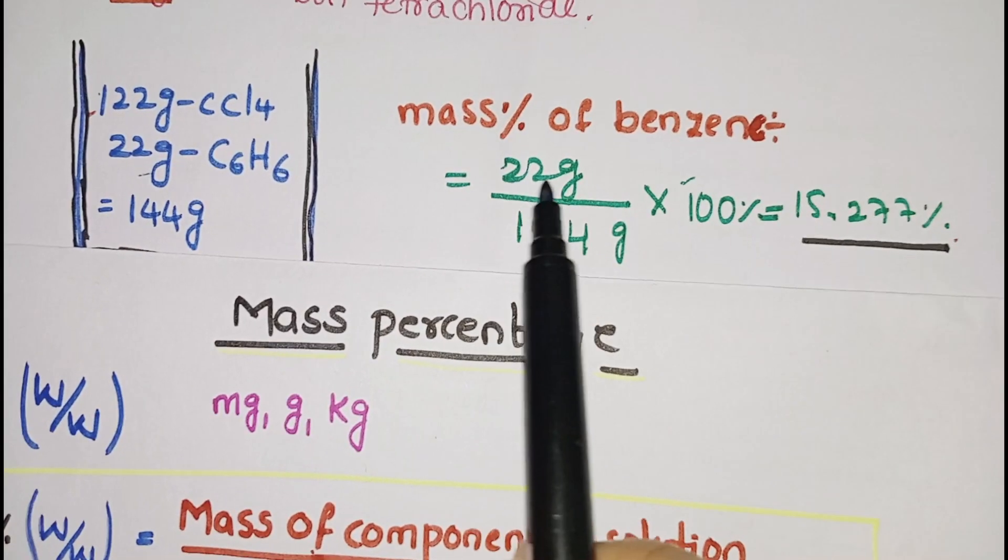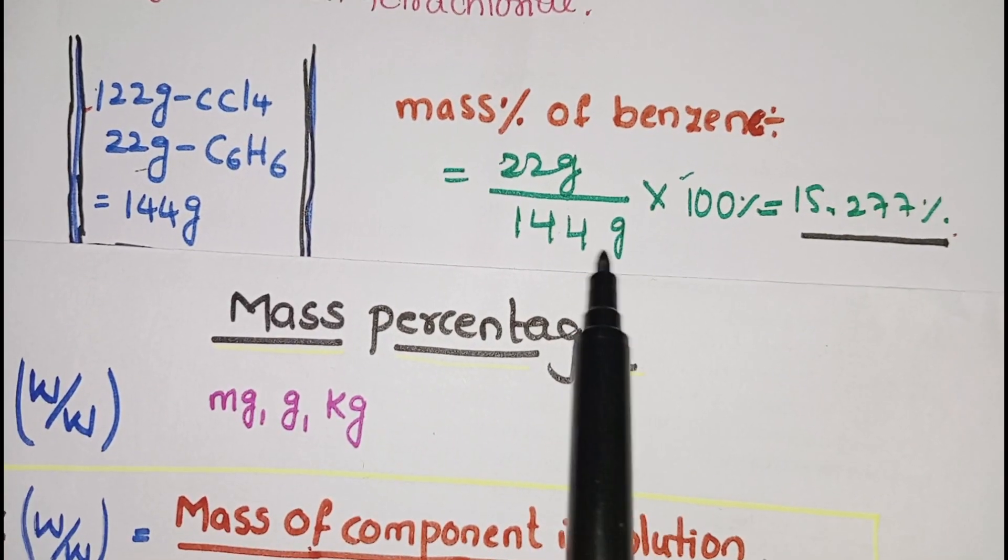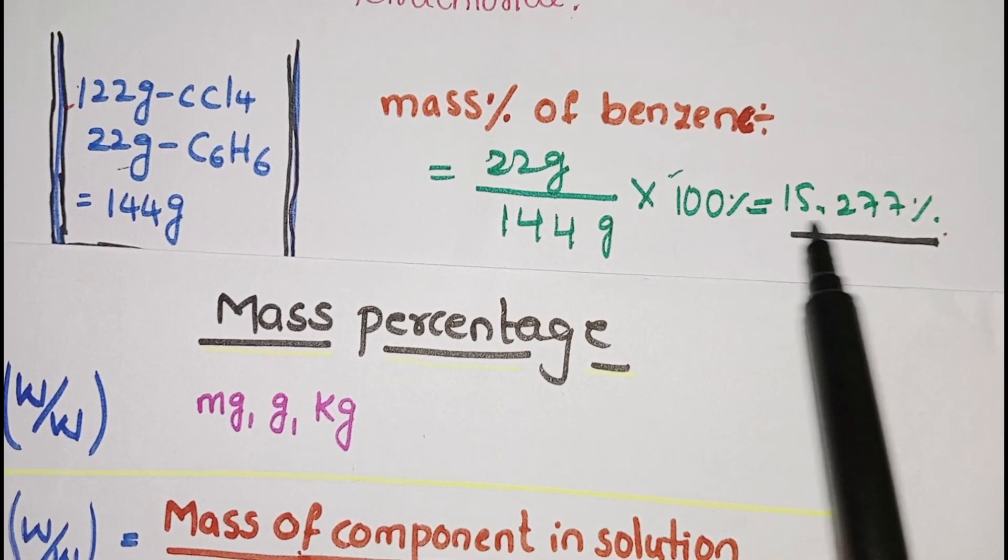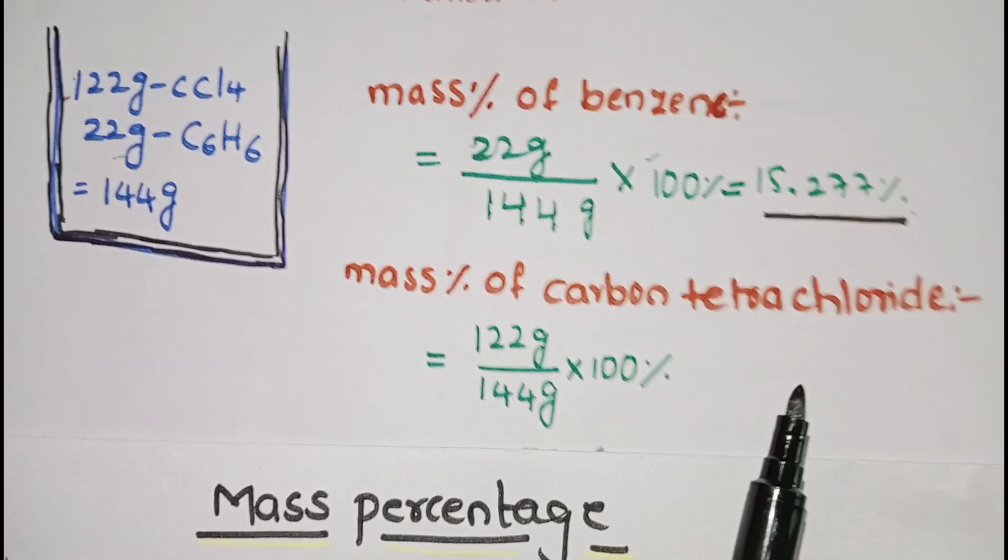So 22 grams benzene divided by total mass of the solution times 100. You get 15.227% mass percentage.